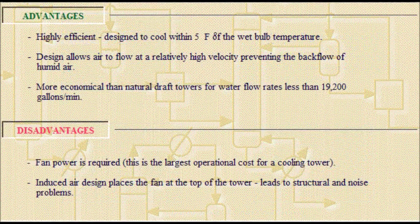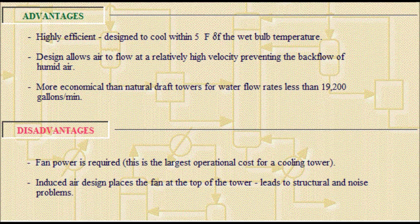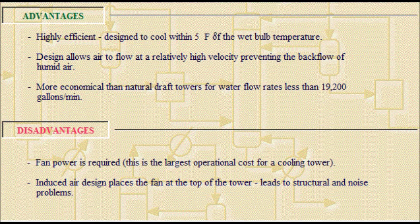Counter-flow cooling towers are designed to cool to 5°F wet bulb temperature and are highly efficient. The design allows air to flow at a relatively high velocity, preventing the backflow of humid air. They are more economical than natural draft towers for water flow rates less than 19,200 gallons per minute. However, counter-flow cooling towers require fan power to operate, and fans at the top of the tower can lead to structural and noise problems.